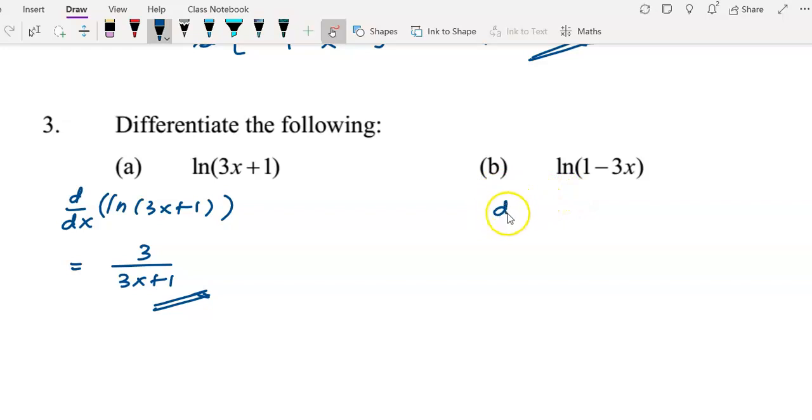For question (b), again there is no name for this function, so I'll write the first derivative symbol d/dx of ln(1-3x). We differentiate the inside function first, 1-3x, to get -3 over (1-3x). You can simplify by multiplying numerator and denominator by -1 to get 3/(3x-1).